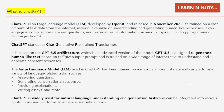ChatGPT stands for Chat Generative Pre-trained Transformer. It is based on the GPT-3.5 architecture, which is an advanced version of the model. GPT-3.5 is designed to generate human-like text based on the given input prompt and is trained on a wide range of internet text to understand and generate coherent responses.